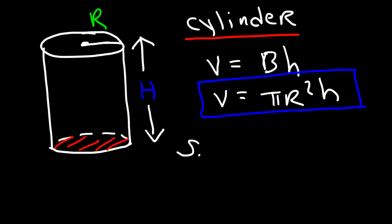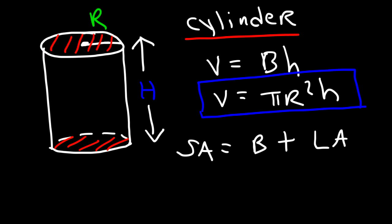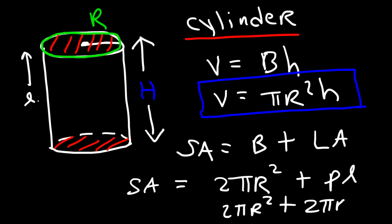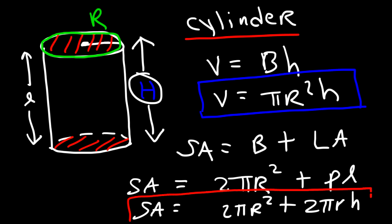The surface area of the cylinder is the area of the base plus the lateral area. The area of the base is pi R squared, but since there's a circle at the top and at the bottom, it's 2 pi R squared. The lateral area is the perimeter of the base multiplied by the height. The perimeter of a circle is its circumference, which is 2 pi R. So the total surface area is 2 pi R squared plus 2 pi RH, where R is the radius and H is the height.